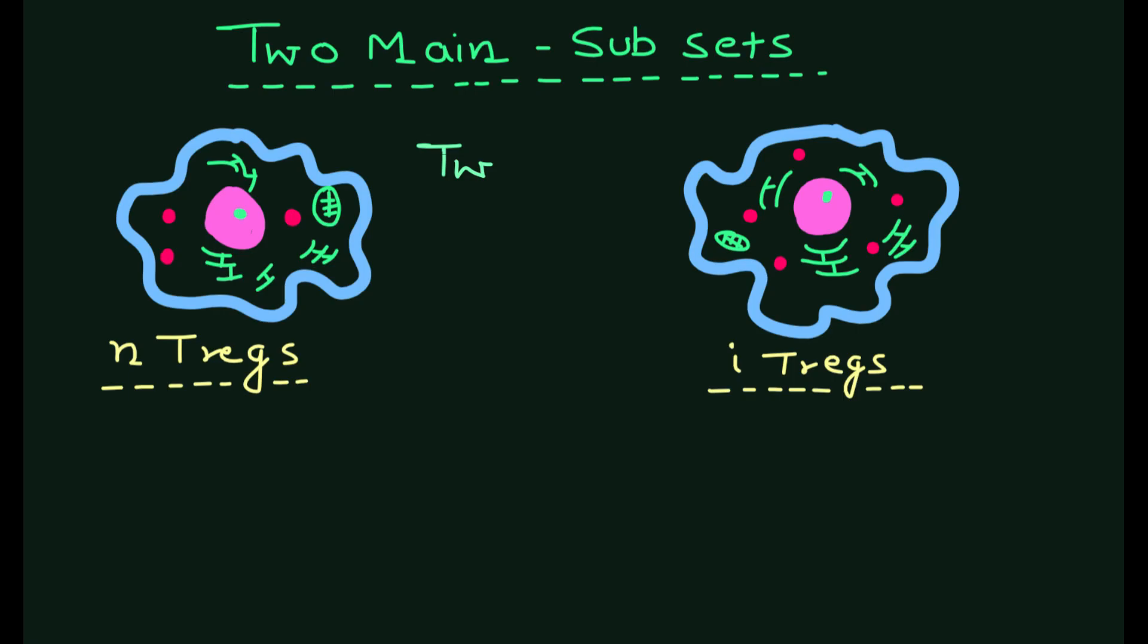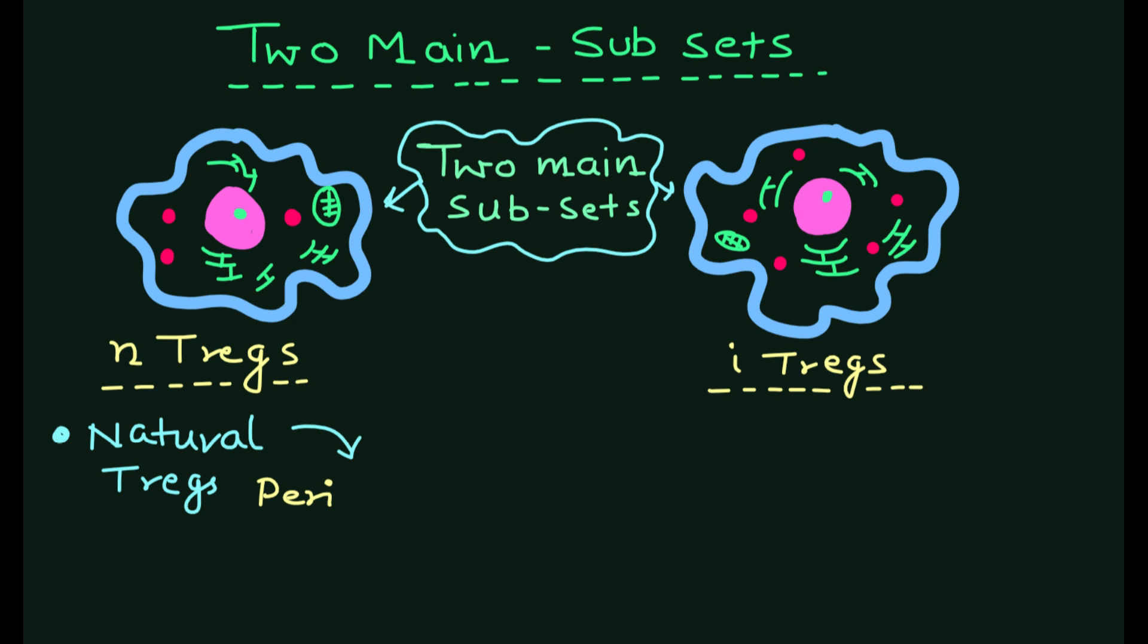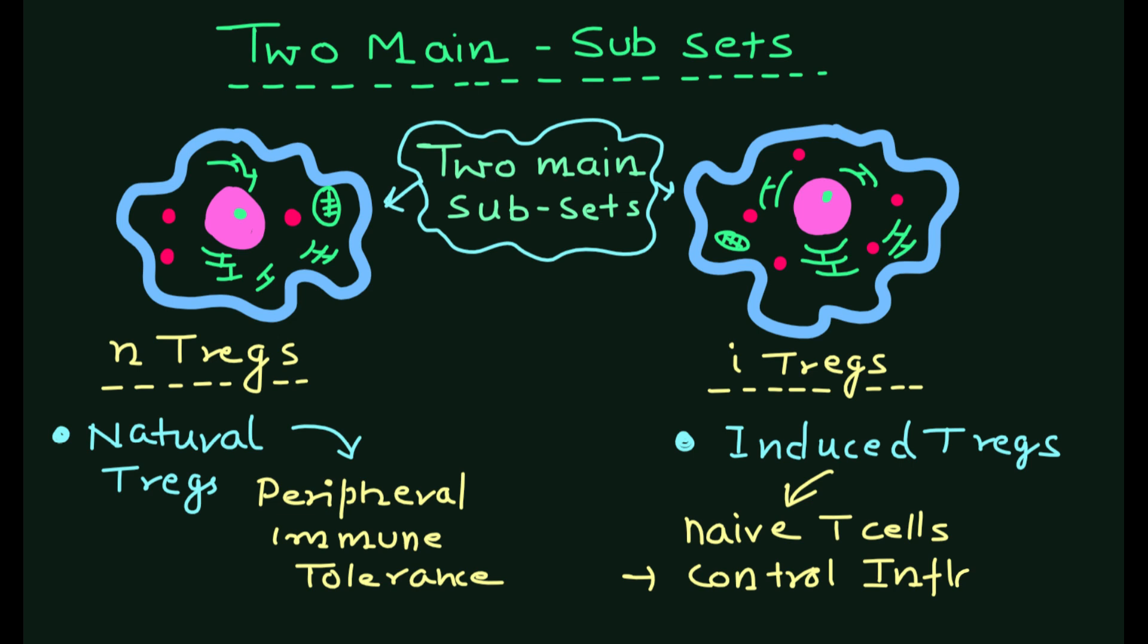Tregs can be further divided into two main subsets based on their origin and function. Natural Tregs or nTregs develop in the thymus and are responsible for maintaining peripheral immune tolerance. Induced Tregs or iTregs develop from naive T cells in peripheral tissue and play a role in controlling inflammation.